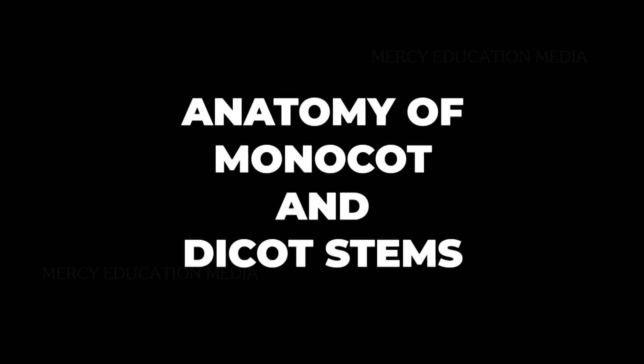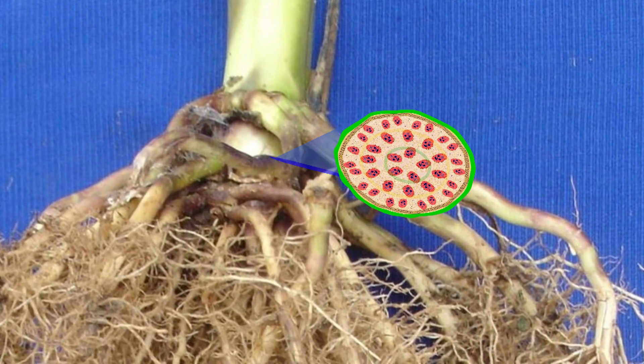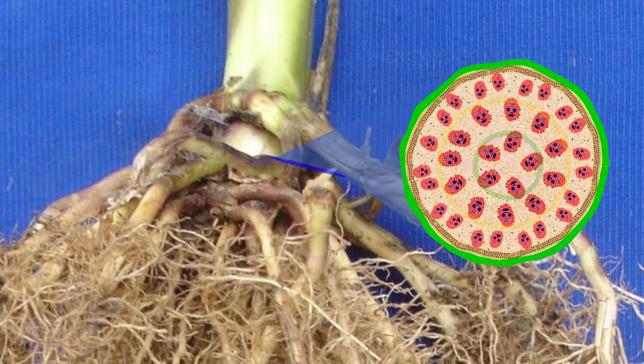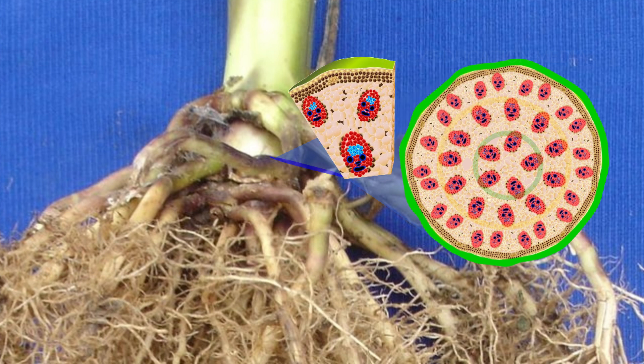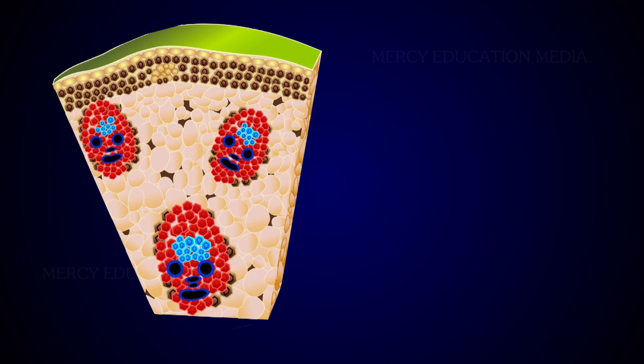Let us pass on to the anatomy of monocot and dicot stems. The primary structure of monocot stem, i.e., maize stem. The outline of the maize stem in transverse section is more or less circular.